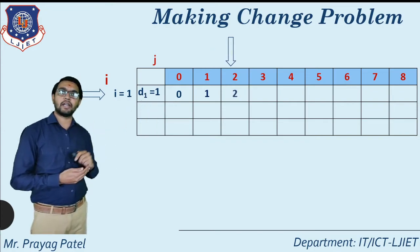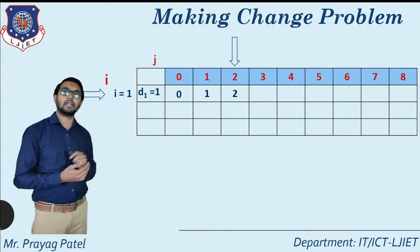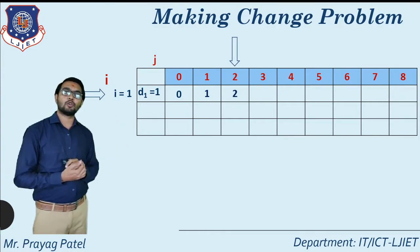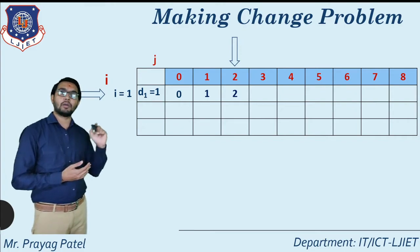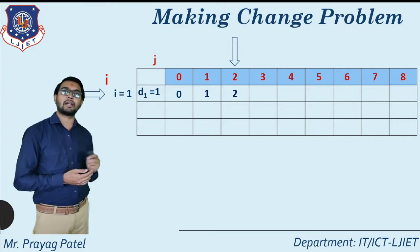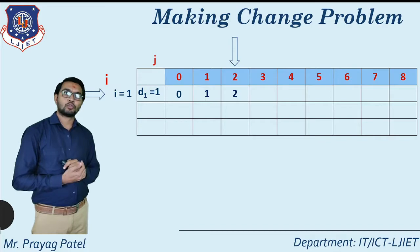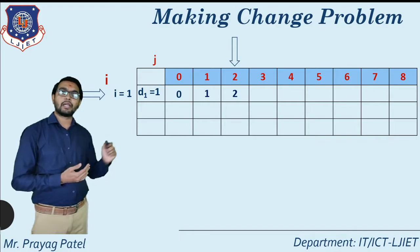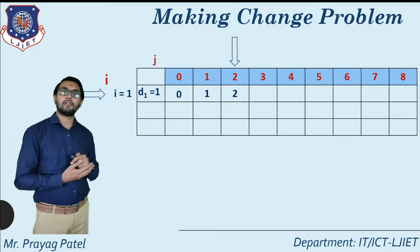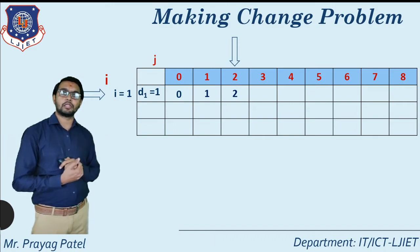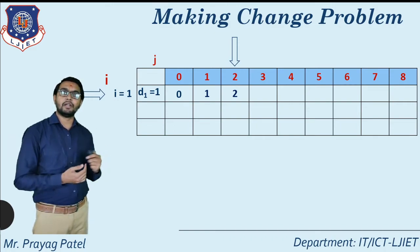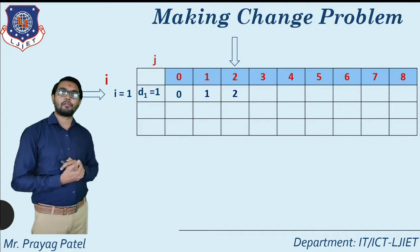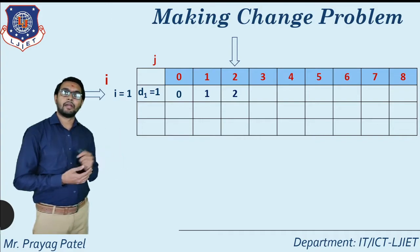Next consider location C[1][2]. C[1][2] means column number 2, so we want to make change for 2. For making change for 2 we require 2 coins, because 2 coins of denomination 1 are required. Next location is C[1][3].